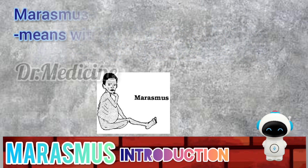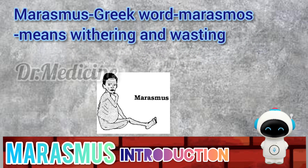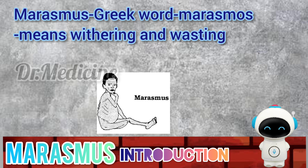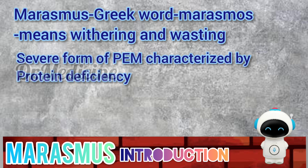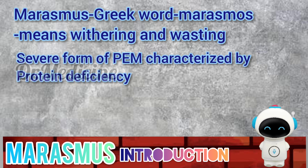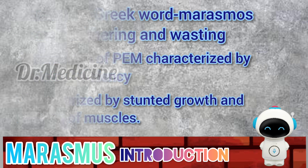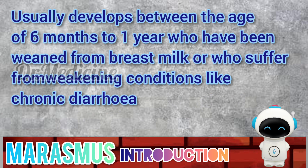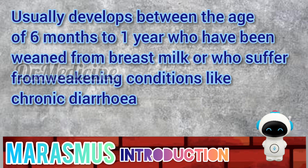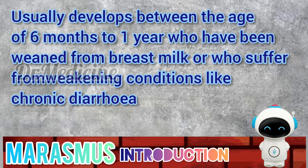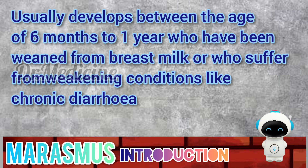The term marasmus is derived from the Greek word marasmus, which means withering or wasting. Marasmus is a form of severe protein energy malnutrition characterized by energy deficiency. It is characterized by stunted growth and wasting of muscle and tissue. Marasmus usually develops between the age of six months to one year in children who have been weaned from breast milk or who suffer from weakening conditions like chronic diarrhea.